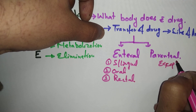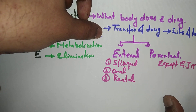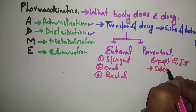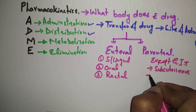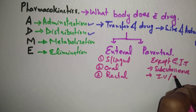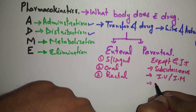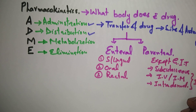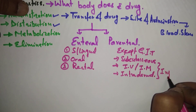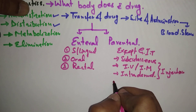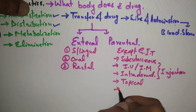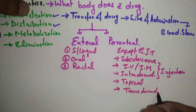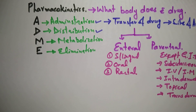The second type is the route except GIT — parenteral — such as subcutaneous, IV, IM, intradermal, and all other types of injections. Then we also have topical and transdermal routes. So these are the routes of drug administration.